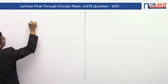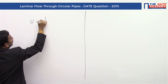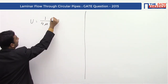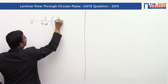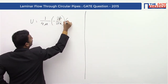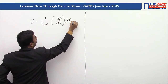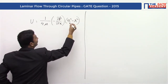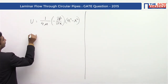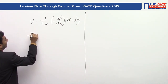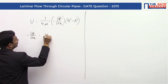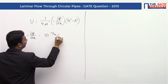So we know from laminar flow, velocity u is given by 1 by 4 mu, multiplied by minus del p by del x, into (R squared minus r squared). Now in the given question, minus del p by del x is given as 10 Pascal per meter.